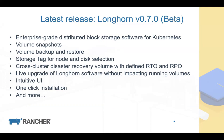The latest release is 0.7. Longhorn is enterprise-grade distributed block storage software for Kubernetes. We support volume snapshots inside the cluster, and you can back up and restore volumes from outside the cluster to S3 or NFS server. We also support storage tags for node and disk selection — for example, labeling SSDs and NVMe drives separately from spinning disks so you can choose storage speed per workload.